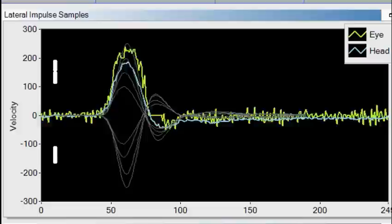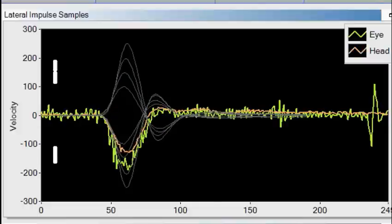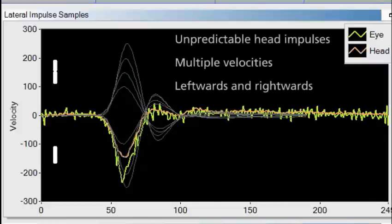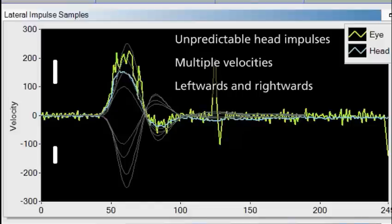The collection algorithm assures that only good head impulses are accepted for analysis. When performing the head impulse, you want to make sure it is randomized. Perform multiple velocities in randomized left and rightward movements.